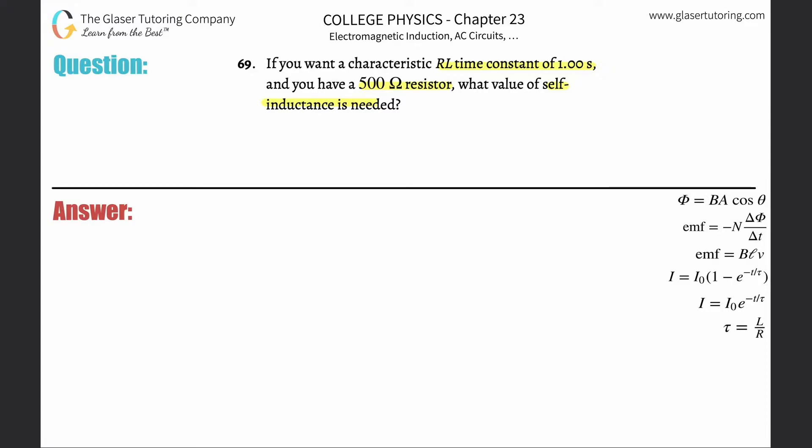So we need a formula that relates the time constant, tau, the resistance R, and self-inductance L. And that's the formula over here on the right hand side.